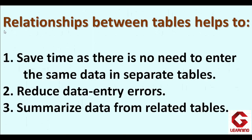Those are the three points of referential integrity. Now, the advantages of establishing relationships between tables are: first, it saves time as there is no need to enter the same data in separate tables. Second, since we are not typing the same information again and again, data entry errors are also reduced. Third, we can summarize data from related tables — if we want information from tables that have a relationship, that is possible.